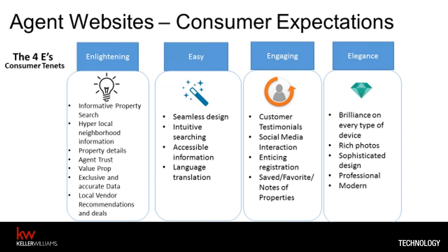Number two — Easy. They want seamless design, intuitive searching, accessible information, and language translation. Think about every time you use a website — you want to easily get in and get what you're looking for. If we know they're looking for photos and properties, make that searching intuitive. Use your search engine and ask yourself: is this how I would search for properties if I were a consumer? Ask your consumers how they like it — we want that to be the easiest, quickest thing they can get to.